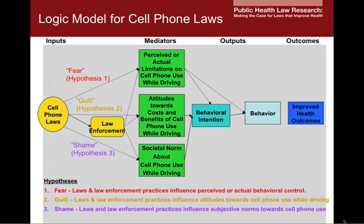By applying the theory to our specific topic of cell phone laws, we can describe the relationships and write study hypotheses. First is the fear hypothesis, which states that the fear of being caught and punished — or deterrence in legal terms — limits the individual's sense of control over using the cell phone while driving. Next is the guilt hypothesis, which posits that the possibility of getting caught and sanctioned negatively affects the actors' attitudes towards cell phone use while driving — basically, is it worth it to make the phone call or send the text message, or am I more concerned about the potential of getting caught? Lastly, we have the shame hypothesis, which posits that laws and law enforcement activities can induce a sense that cell phone use while driving is looked down upon by others, or that it's shameful.